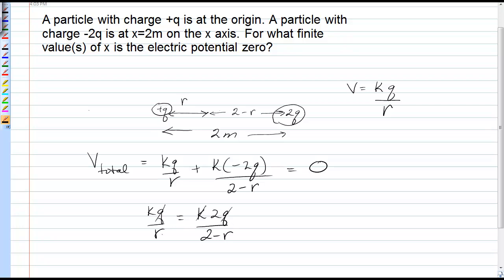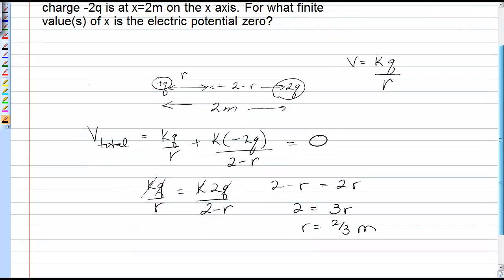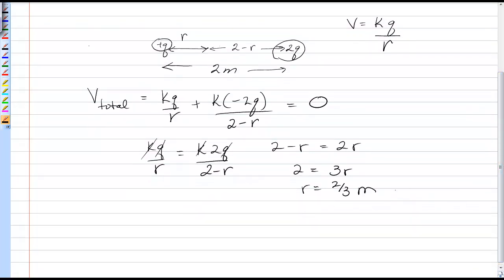So it means that kq over r must exactly equal k2q over 2 minus r. Qs cancel, ks cancel, and we get that 2 minus r must equal 2r, or 2 equals 3r, r equals 2 thirds of a meter. So there's one possible situation, or we could write that as x equals 0.67 meters.